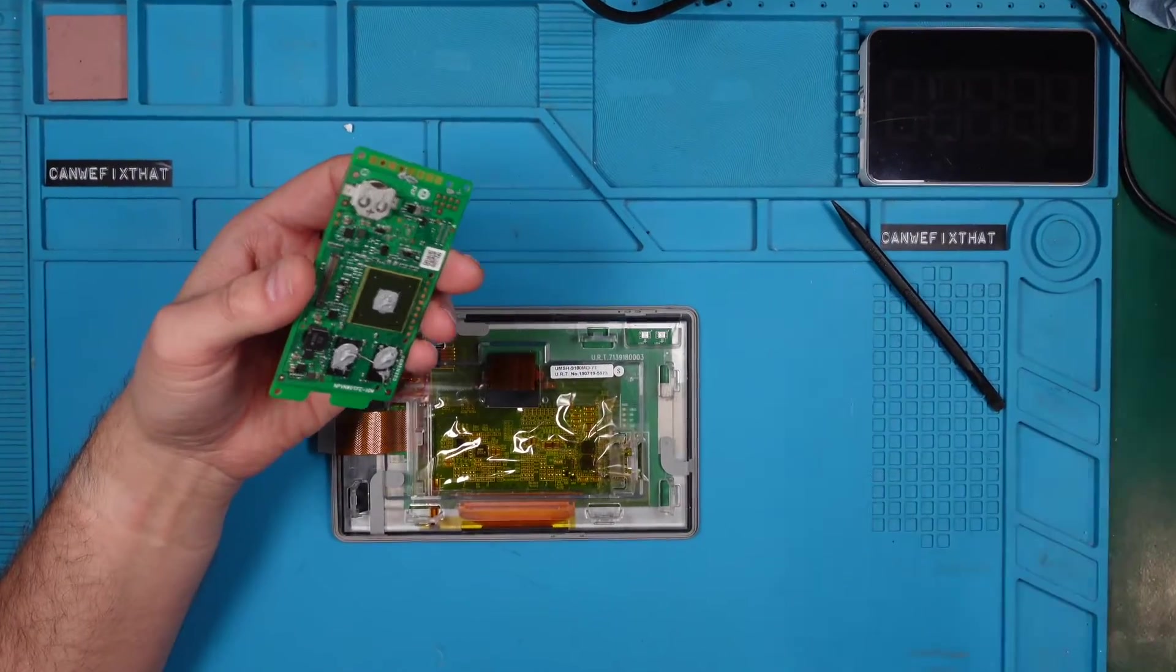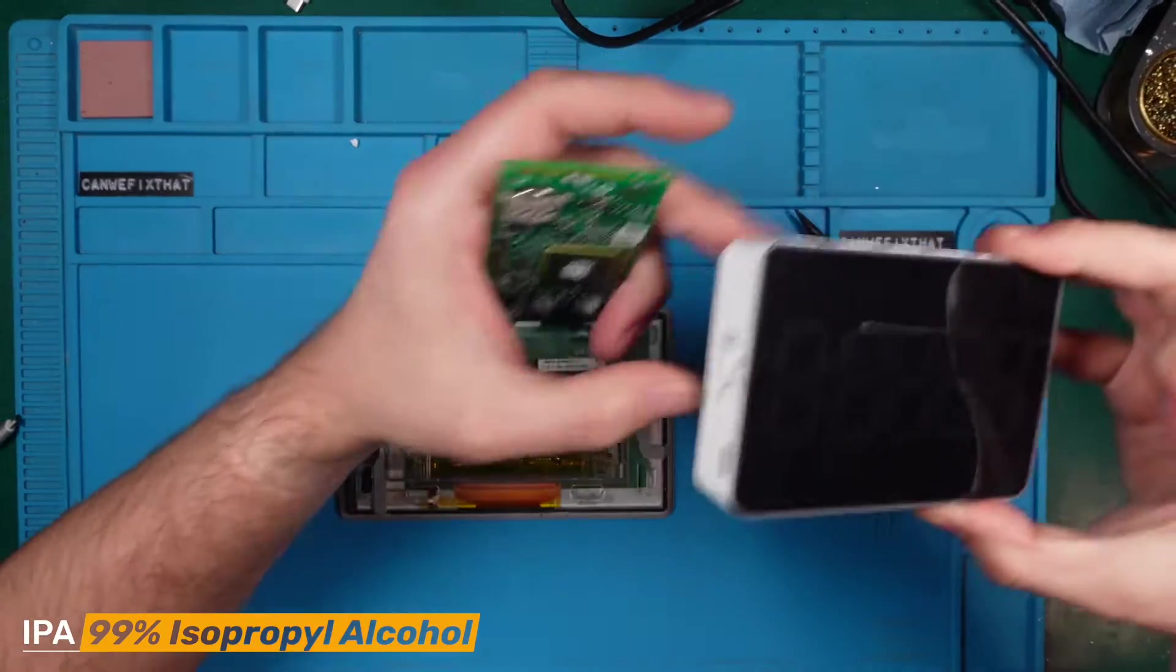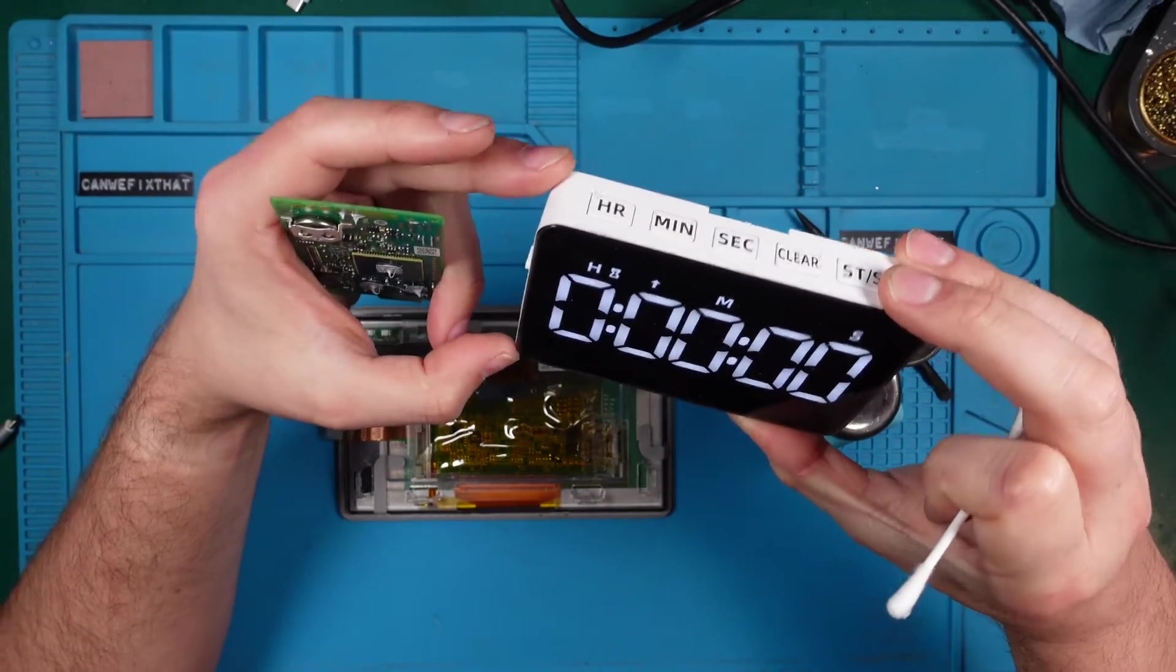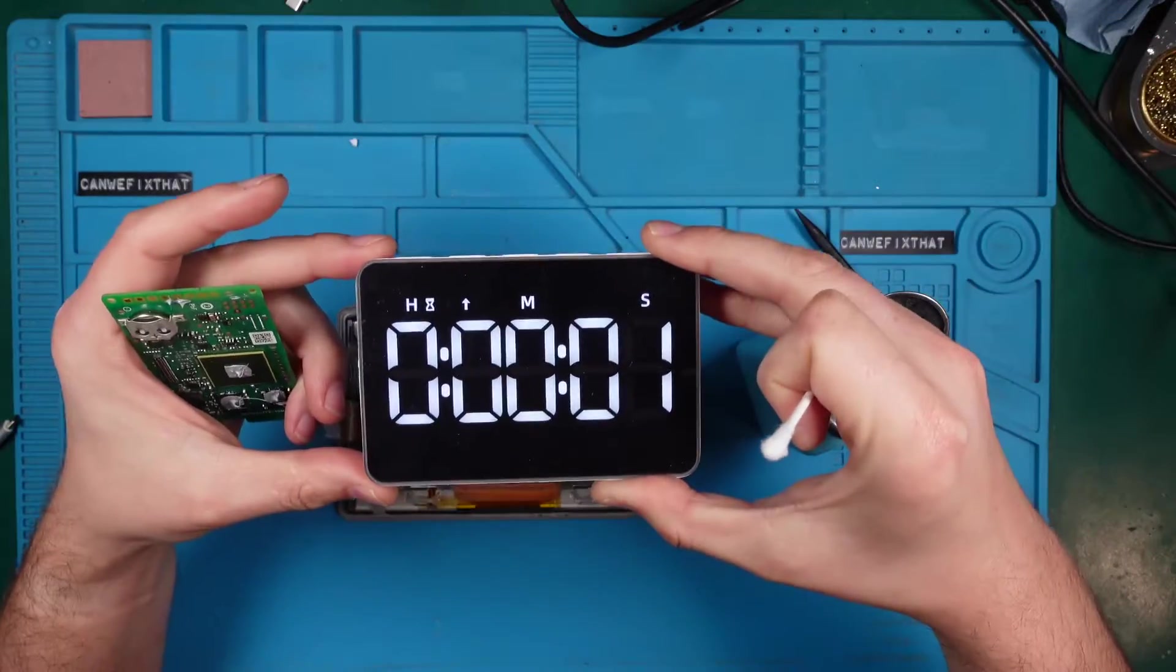Time to grab some IPA, also known as 99% isopropyl alcohol, to clean some spots on the motherboard. But before doing that, let me start a timer so you can get a better idea of how long this repair takes.